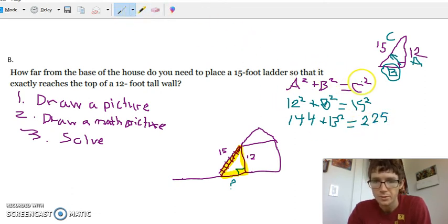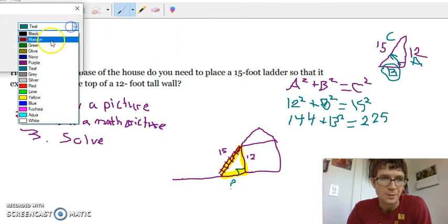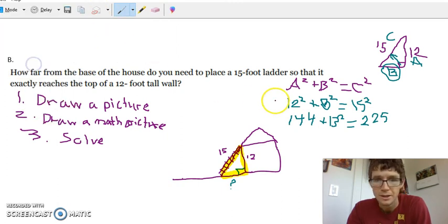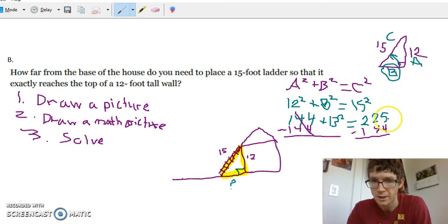Okay so we're trying to get b squared by itself. That means we got to subtract 144 from both sides. So minus 144 from both sides. Here this cancels right. Now 225, 5 minus 4 is 1, we got to borrow here. So this is a 1, this is a 12, 12 minus 4 is 8. So that's our answer. We got b squared equals 81.